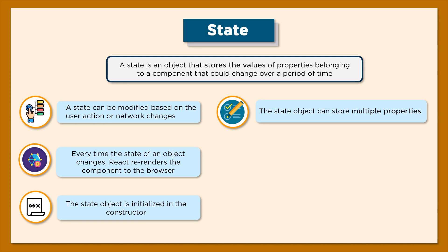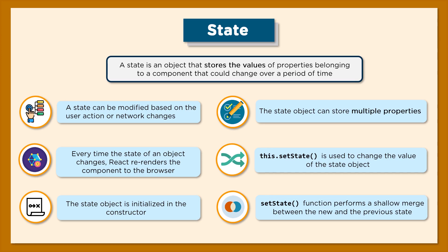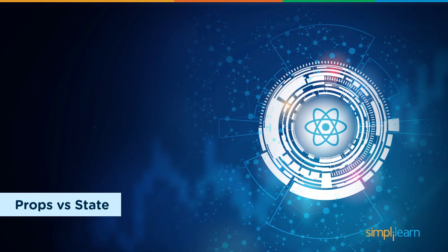The state is initialized in the constructor, and a state can also store multiple properties. A method called setState is used to update the value of the state object. This function performs a shallow merge on the new and the previous state, ensuring that the previous state values are overwritten by the new state values.